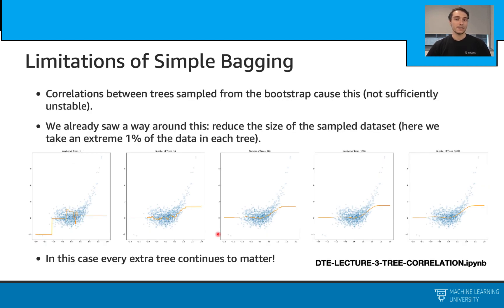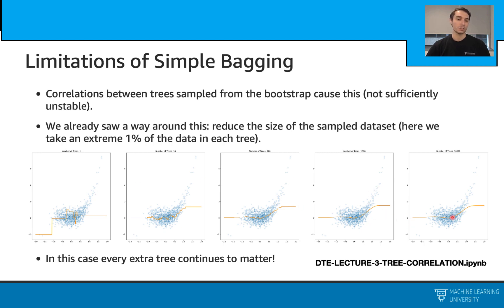The main reason behind this type of response is that we still have some correlations between the trees coming from the bootstrap samples. One way to create some difference is, as we have seen before, to reduce the sample size. So if we just take 1% of the training data to train each of these trees, this time we will see the effect of adding more and more trees. For example, if we go from left to right, we will see that the response gets smoother.